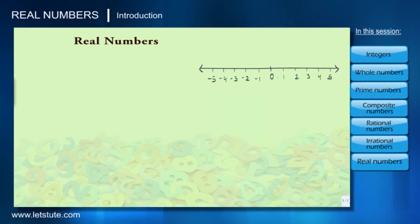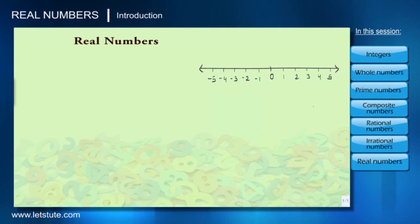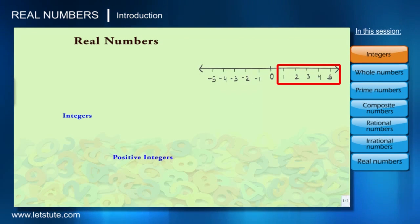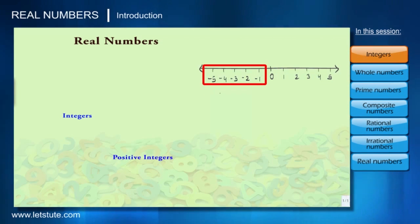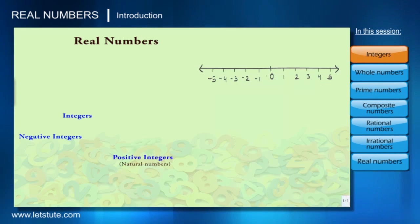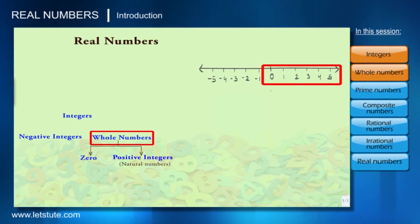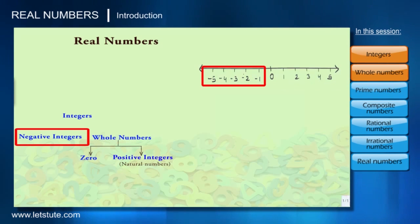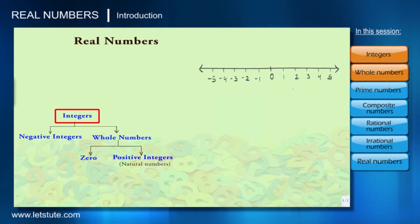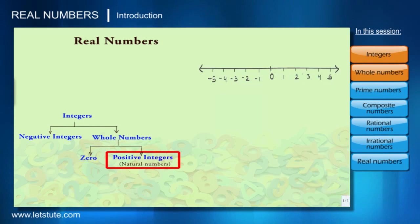These negative numbers, zero, and positive numbers which are without fractions on the number line are called integers. Positive numbers are called positive integers and negative numbers are called negative integers. Positive integers are also known as natural numbers, and if we take zero with only positive integers they are called whole numbers. So we can say that negative integers and whole numbers together are called integers.